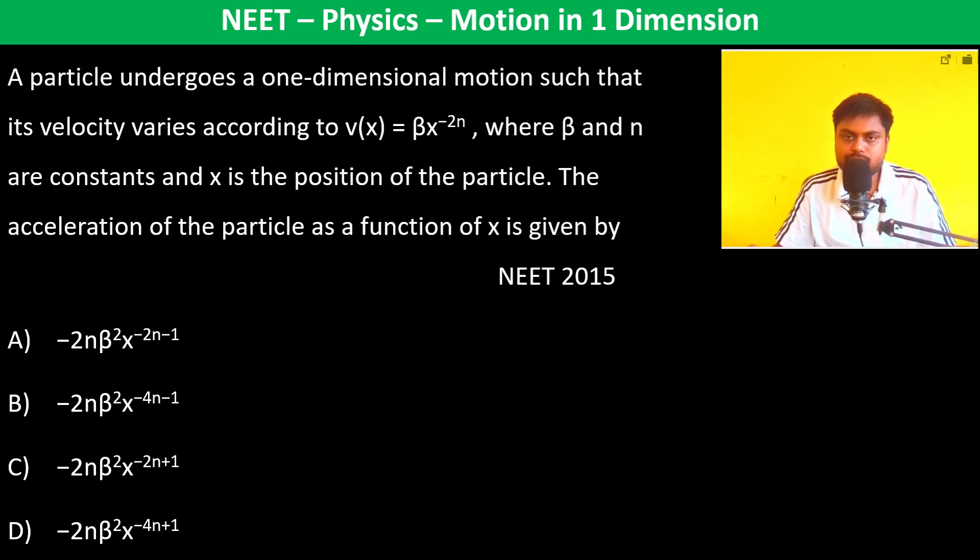A particle undergoes one-dimensional motion such that its velocity varies as v(x) = Bx^(-2n), where beta and n are constants and x is the position of the particle. The acceleration of the particle as a function of x is given by: